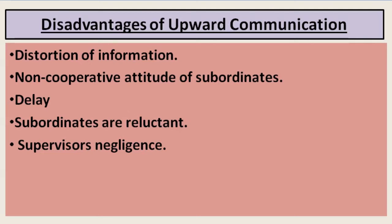The next point is that subordinates are reluctant. In the disadvantages of upward communication, we count the reluctancy of the subordinate. Reluctancy means they are least interested to participate, least interested to interact, and least interested to take their responsibility. Their nature is very restrictive; they are not very flexible in the organization. They really do not want to participate or contribute to the growth of the organization. This reluctancy of the subordinate interrupts the upward channels of communication and is counted as a disadvantage.